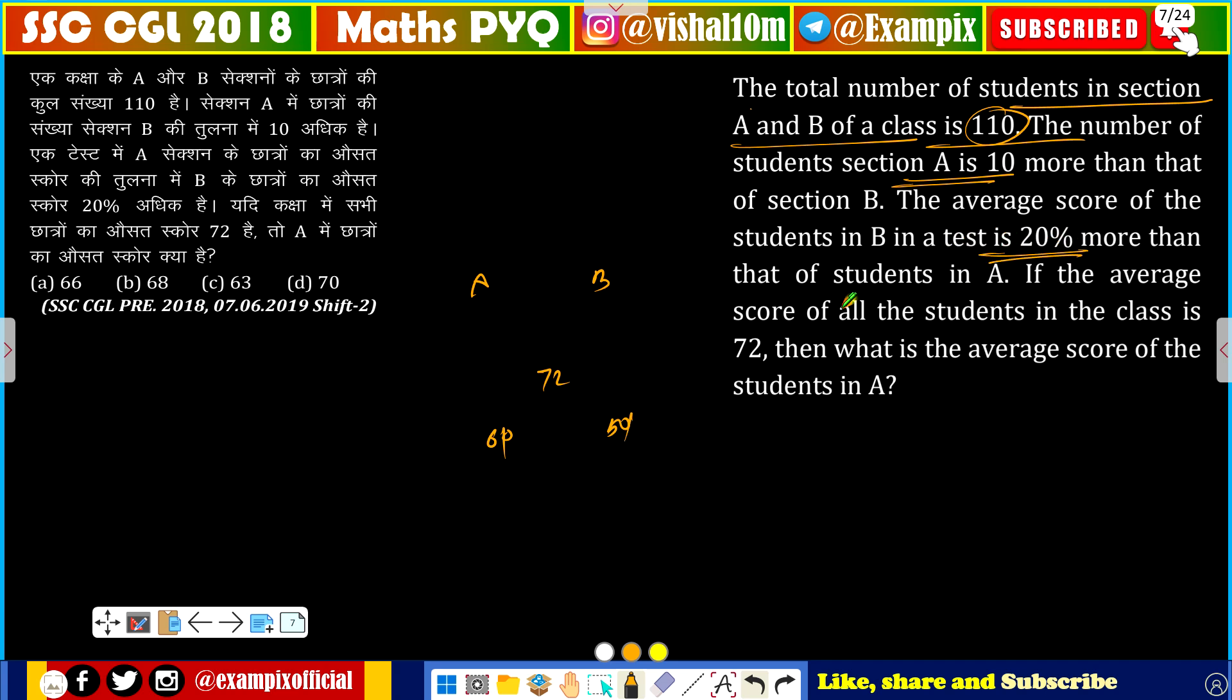The average score of 20 percent is more than A, so we can get 20% fraction value 1:5, and we can get 5x and we can get a success.